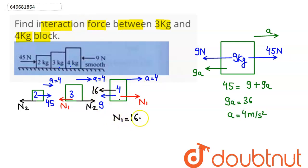Hence we have from 4 kg block N1 here as 16 plus 9, which gives us N1 as 25 newton, which is the interaction force between 3 kg and the 4 kg block. So we have our answer as 25 newton.